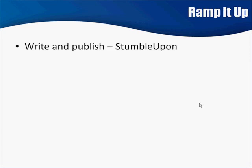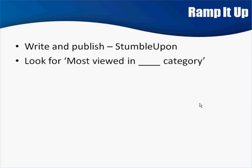So you go out, write and publish, and then you do the StumbleUpon thing. You write and publish your article, check it out, and rate it on StumbleUpon. When you view the article, at the bottom you'll see a section that says 'most viewed' in whatever your niche category is. The article is categorized and you can see other articles in the same category.